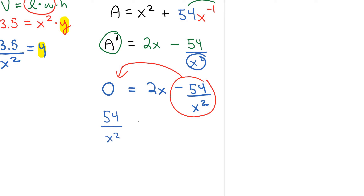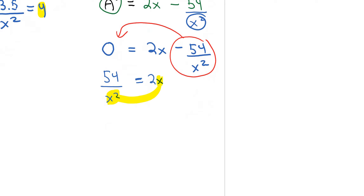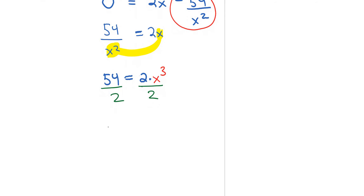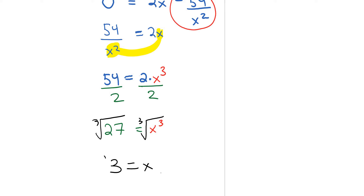So 54 over x squared equals 2x. Multiplying both sides by x squared gives 54 equals 2 times x cubed. Dividing both sides by 2 gives 27 equals x cubed, and we get a very nice number here — taking the cube root of both sides, the cube root of 27 is 3, so x equals 3.